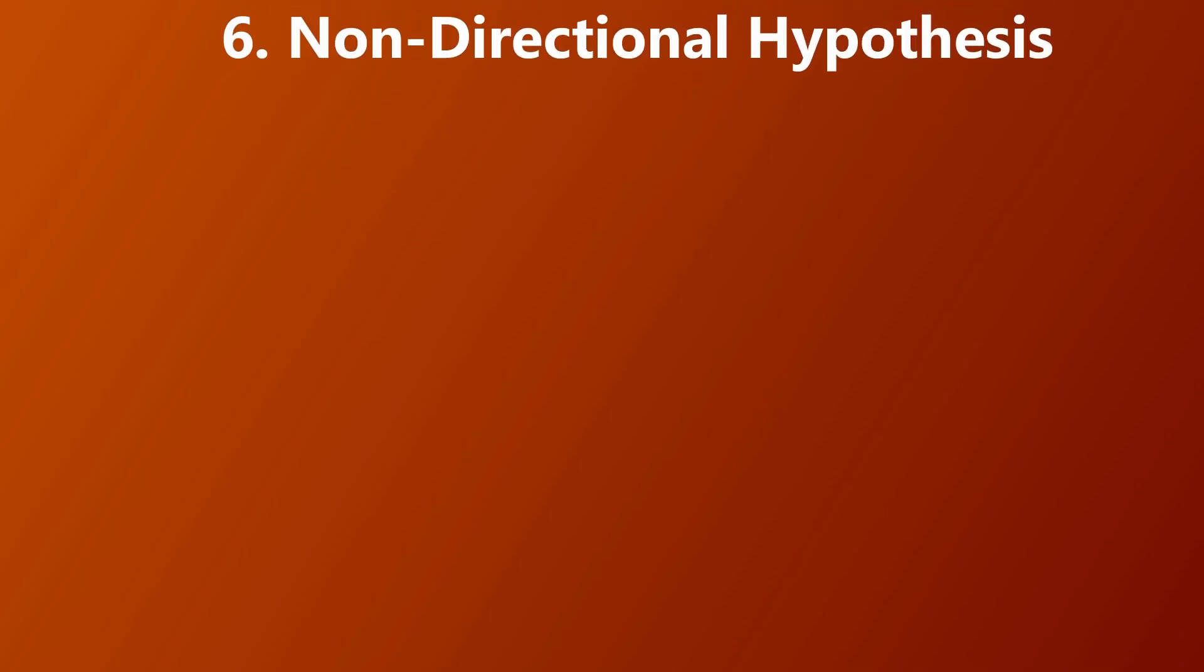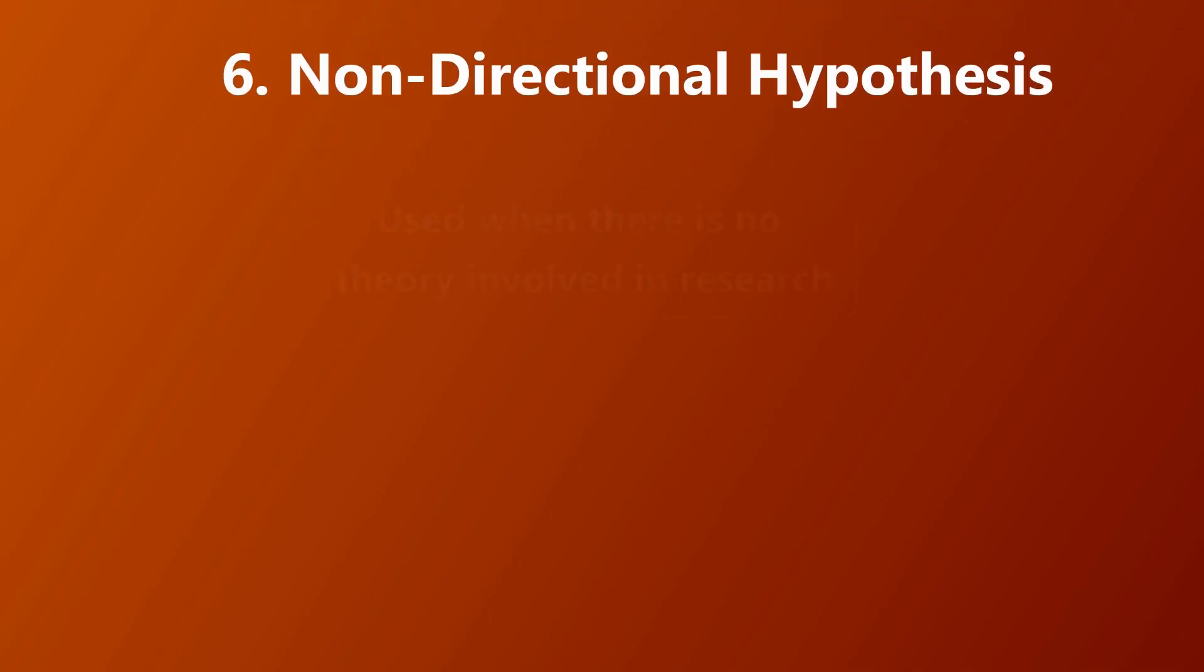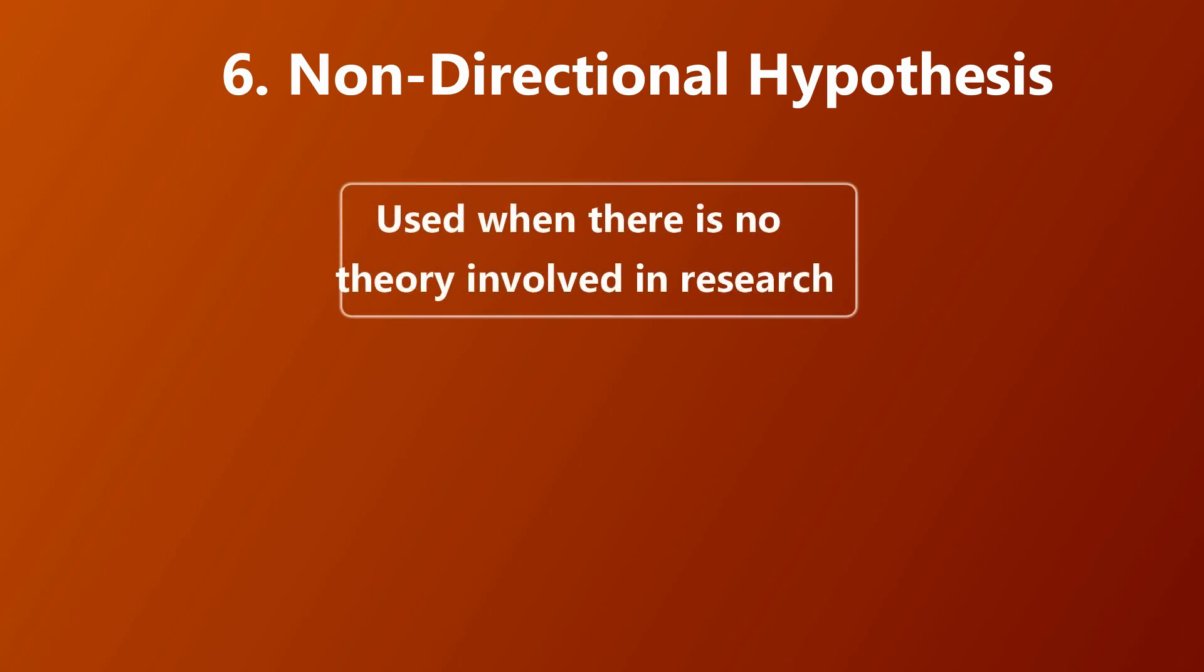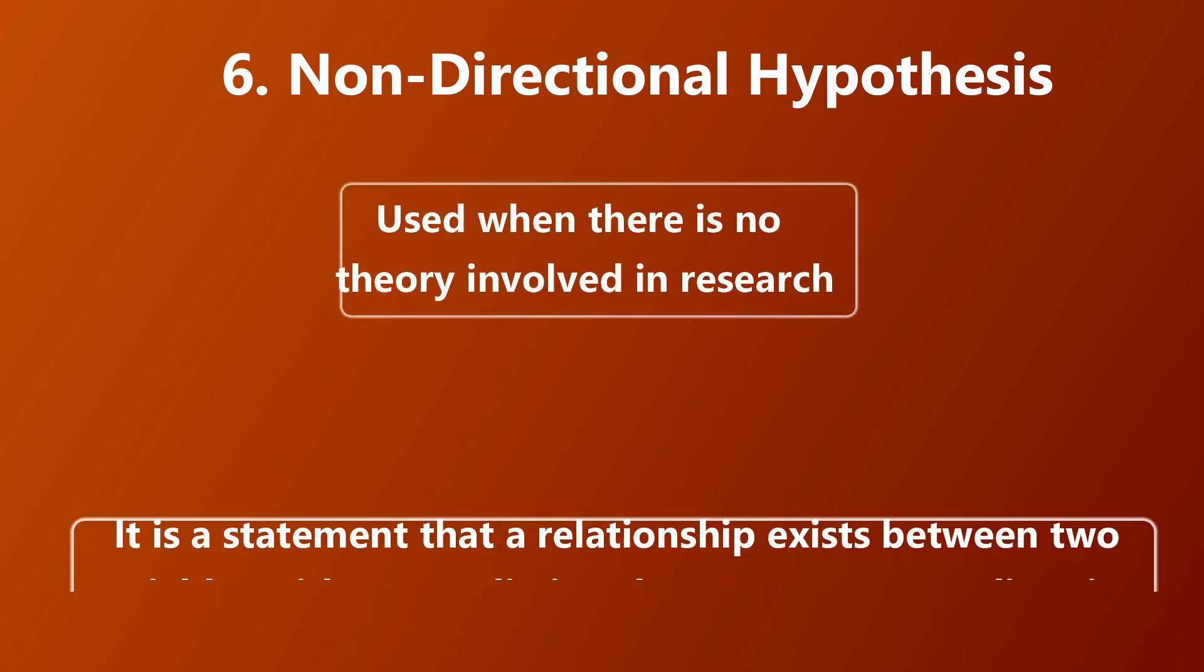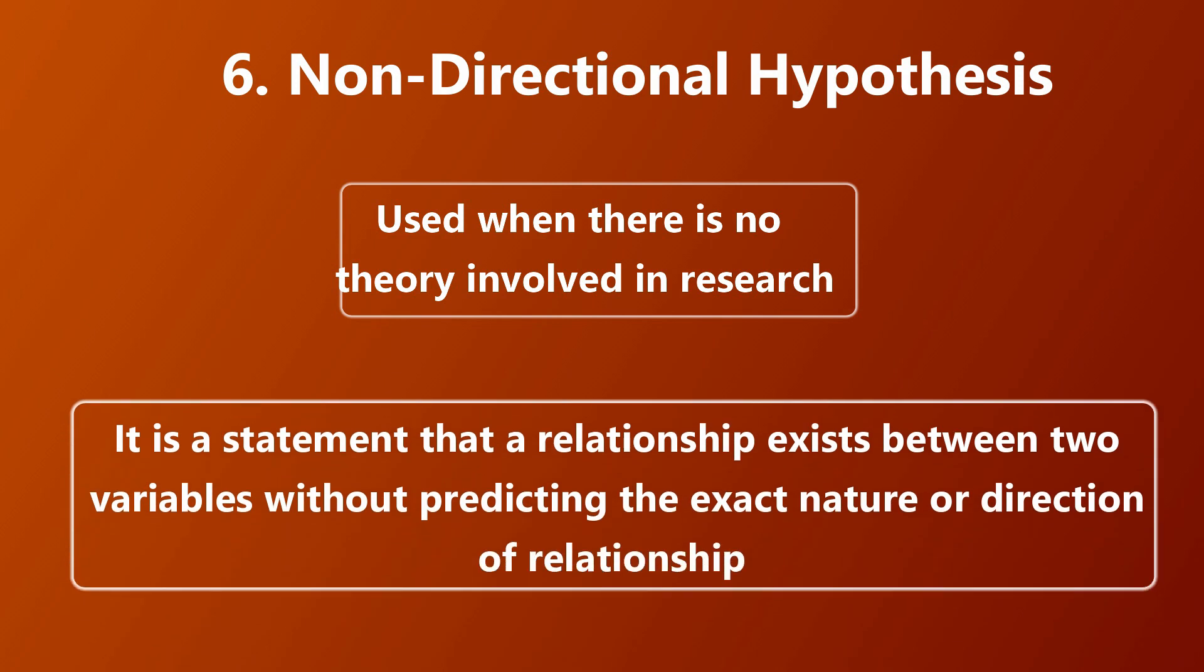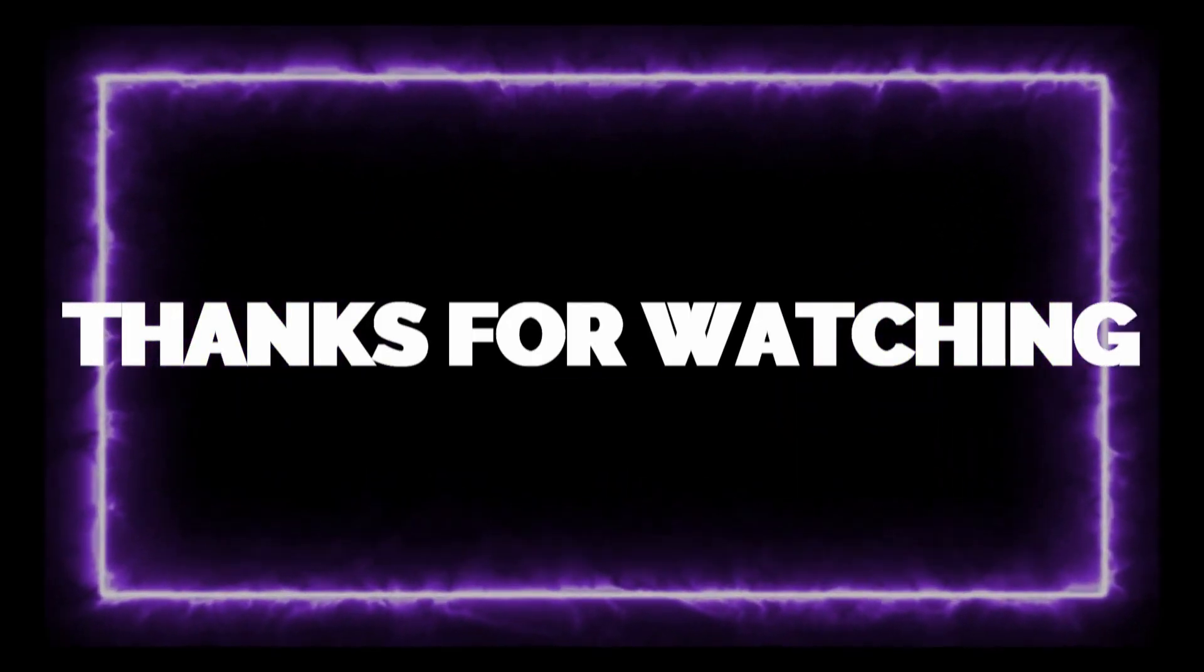A non-directional hypothesis is used when there is no theory involved in research. It is a statement that a relationship exists between two variables without predicting the exact nature or direction of the relationship. Thanks for watching.